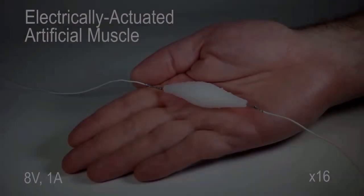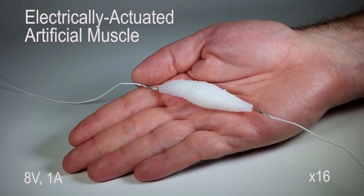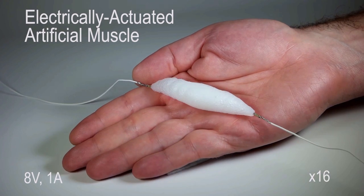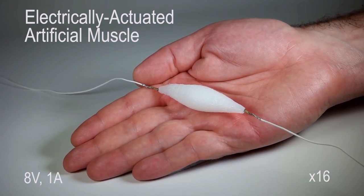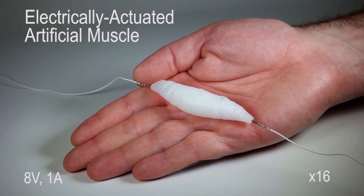A breakthrough in soft robotics means scientists are now one step closer to creating lifelike machines. Researchers at Columbia Engineering have developed a 3D printed synthetic tissue that can act as active muscle.